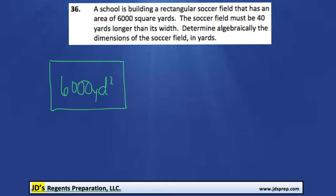The soccer field must be 40 yards longer than its width. So if we call this distance our width, we'll call it W, and this will be our length. It's saying that the length must be 40 yards longer than the width, meaning the width plus 40.